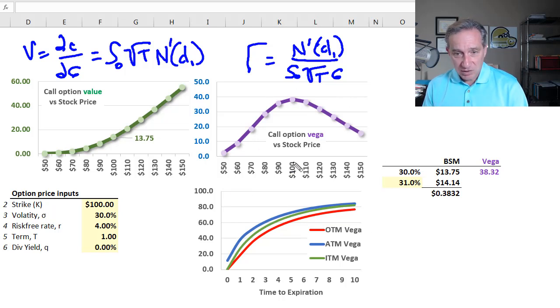My purple plot here is for Vega with the option price input assumptions I've used before. When this option is at the money, that's when Vega is highest. When the option has a value of $13.75—it's a one-year option—the associated Vega peaks at 38.32, so we can see how to interpret it.